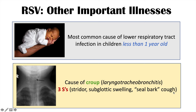When we see croup in young children, they are affected with the three S's: stridor, subglottic swelling, and a seal bark cough. Here is an x-ray image of croup, and medical professionals can remember a fourth S — the steeple sign — because the narrowing looks like a steeple on the x-ray. So the four S's are: stridor, subglottic swelling, seal bark cough, and the steeple sign.